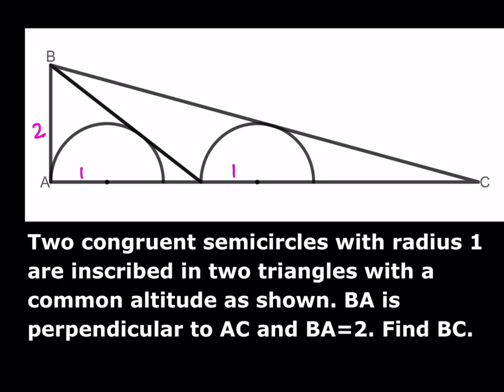I'm going to drop a perpendicular that way, and then another perpendicular this way. These are perpendicular lines because the tangent line is always perpendicular to the radius at that point. This is also 1, and this is also 1.